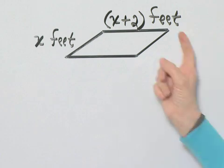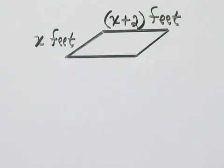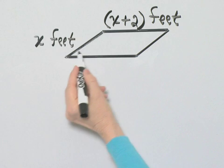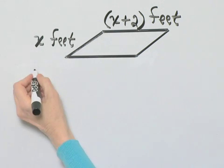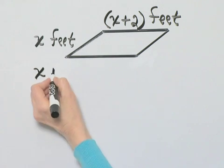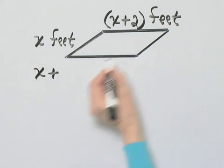And now remember we're given that the perimeter of this deck is 252 feet. Perimeter means distance around. So let's go ahead and this is x feet plus x plus 2.